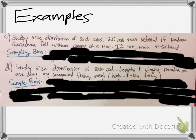So let's try these two examples. Here are some examples. So this study shows the distribution of scrub oaks, which are trees. If 20 oak trees are selected, if a random coordinate fell within the canopy of a tree, it was selected. And if not, it was reselected.